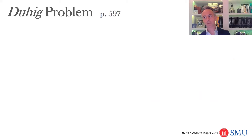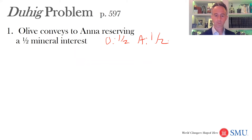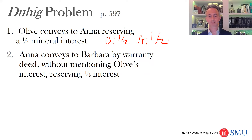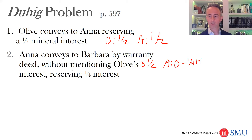Let's follow this on page 597 in your text. Olive conveys to Anna reserving a one half mineral interest — so Olive has one half, Anna has one half. Anna conveys to Barbara by warranty deed but doesn't mention Olive's interest, reserving a quarter interest for herself. Olive still has one half because we can't change her interest — she's not in that transaction between Anna and Barbara. Anna ends up with zero, minus a one quarter mineral interest lawsuit. Barbara gets one half, as close to three quarters as she can, plus a quarter mineral interest lawsuit against Anna.